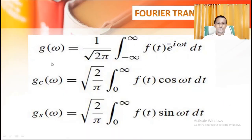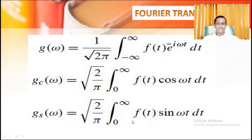We have the general equation for f(t), a function in the time domain, to a function g(ω) in the frequency domain: g(ω) = (1/√2π) × integral from minus infinity to plus infinity of f(t) e^(−iωt) dt. The cosine function and sine function forms are: g(ω) = √(2/π) × integral from 0 to infinity of f(t) sin(ωt) dt.